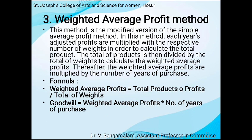The third method is the weighted average profit method. In this method, they assign certain weights for each year's profit, like 1, 2, 3, and so on. Formula: Weighted Average Profit = Total Products of Profit ÷ Total of Weights. Goodwill = Weighted Average Profit × Number of Years Purchase.